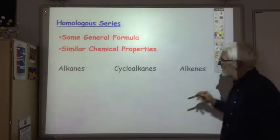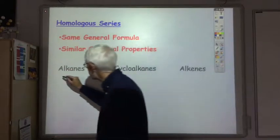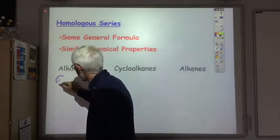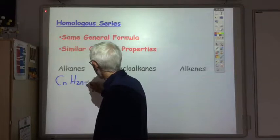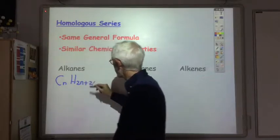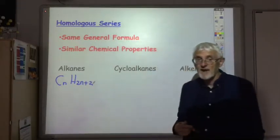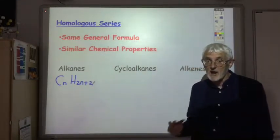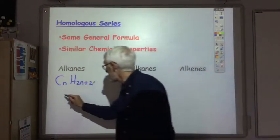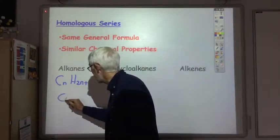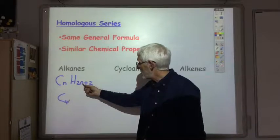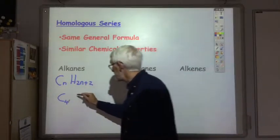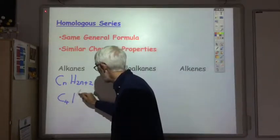The general formula for the alkanes is CnH2n+2. So for example, if I told you you had an alkane with four carbons, so it was C4, then the number of hydrogens would be 2 times 4, so that's 8 plus 2. So it would be C4H10.